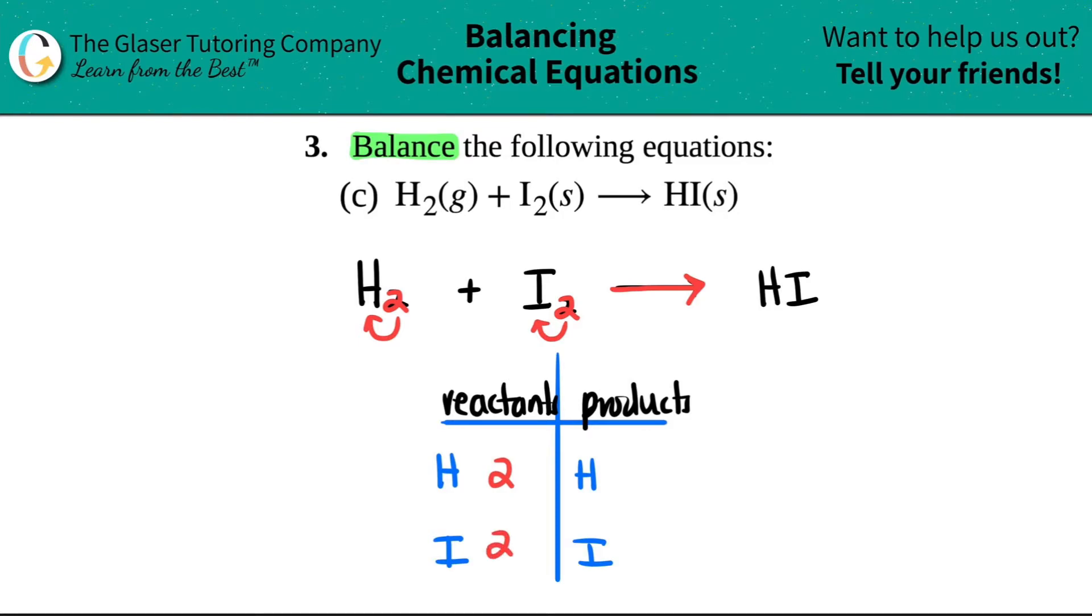Now I go on my product side. It was just one H and one I, right? So I have one hydrogen and one iodine.